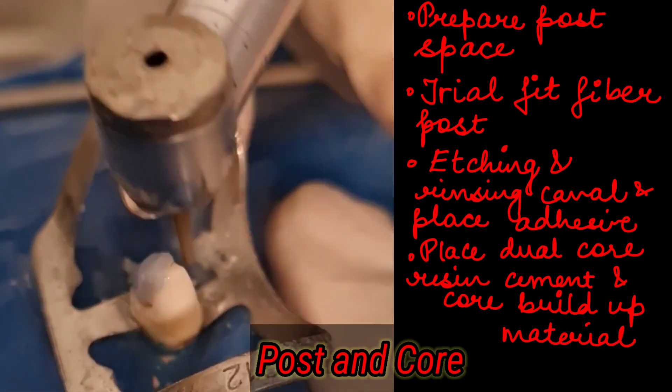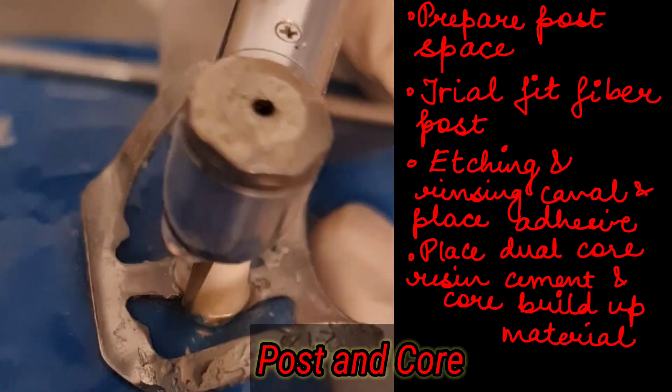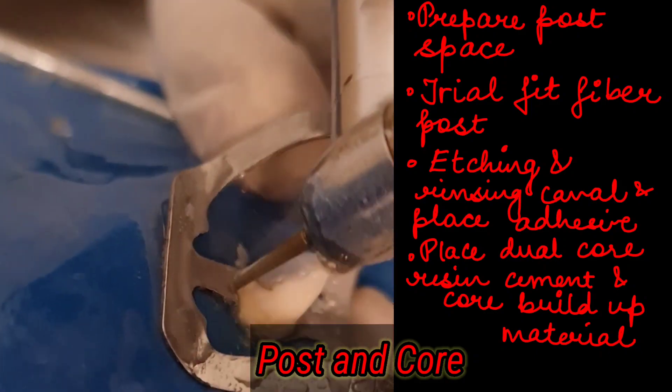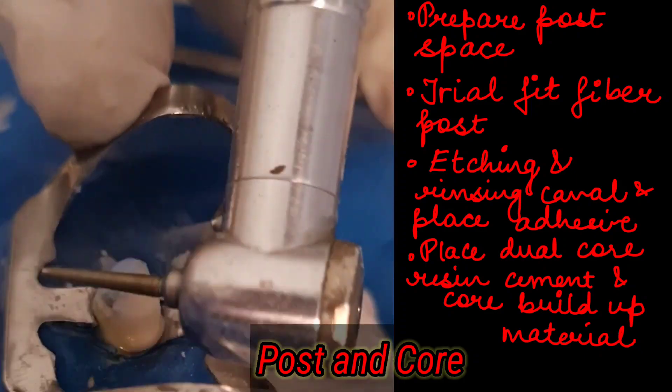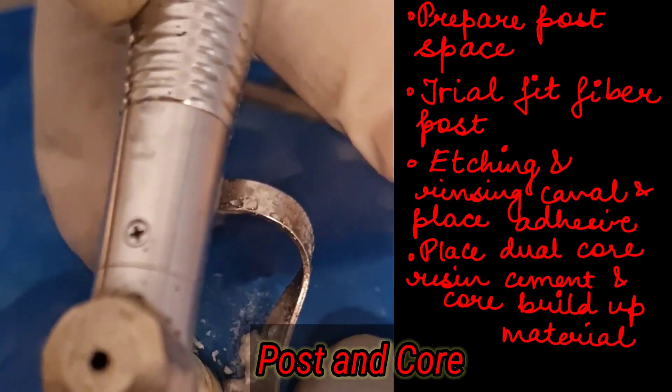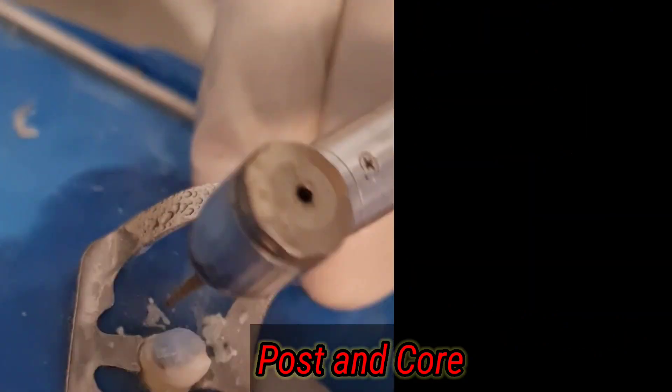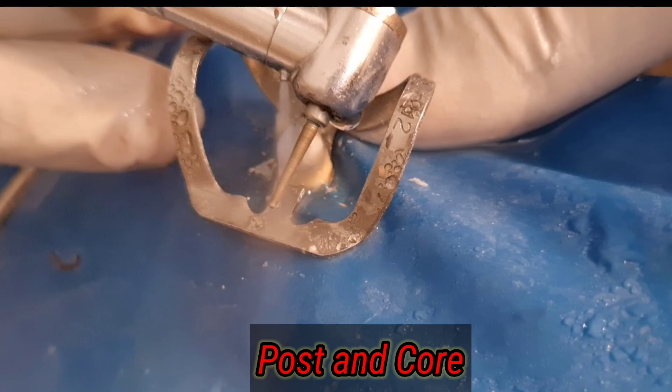After you cure the composite, you can make adjustments to shape the core into the crown preparation so that the preparation looks like a crown. You can take an impression for fabrication of prosthetic crown and then you can give a crown on top of it. This is the post and core preparation, post and core procedure. I hope you have liked the video.